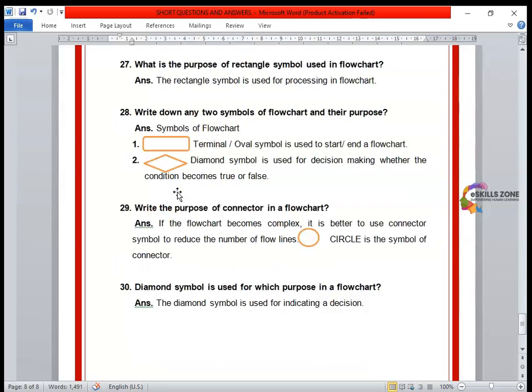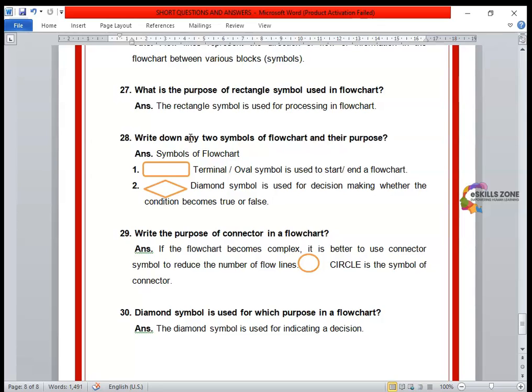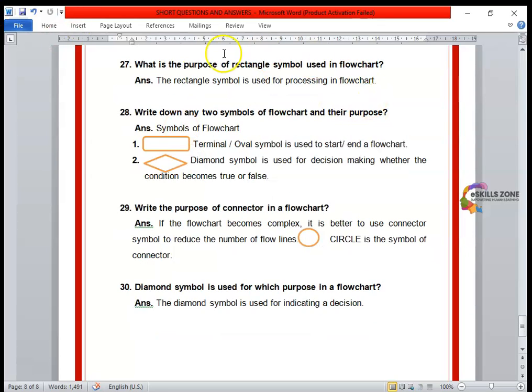Next question, number 26, write the use of flow lines. The answer is: flow lines represent the direction of flow of information in the flowchart between the symbols. Next question, number 27, what is the purpose of the rectangle symbol used in the flowchart? The answer is: the rectangle symbol is used for processing in flowchart.